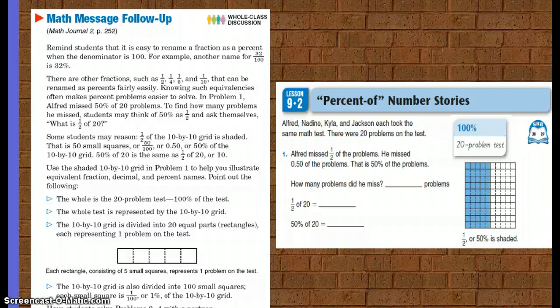So the whole is the 20 problem test. 100 percent of the grid is represented. The whole test is represented by the 10 by 10 grid. It's divided into 20 equal parts, or rectangles, and each represents one problem on the test. So the 10 by 10 grid is also divided into 100 small squares. Each small square is 1 one-hundredth, or 1 percent of the 10 by 10 grid.